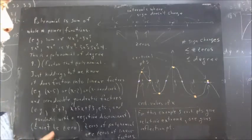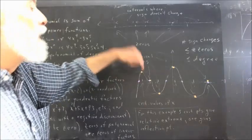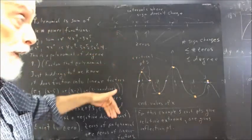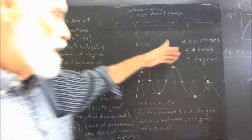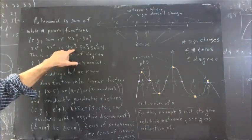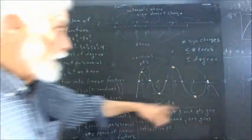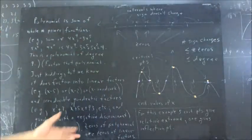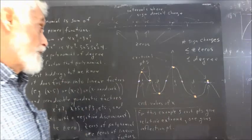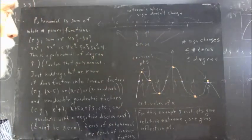By looking at the highest power term in the polynomial, we can determine whether, for values of x to the left of the leftmost zero, the function is positive or negative, and also whether the function is positive or negative to the right of the rightmost zero. For an odd power function, we wouldn't be negative on both ends — we'd be negative on one side and positive on the other. If you're not sure about this, look at the preceding video clip toward the end.